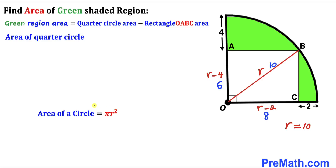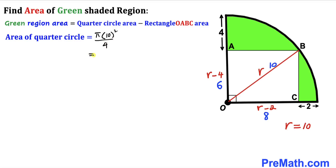Recalling the area of a circle formula: area equals pi R squared. The area of this quarter circle is pi times 10 squared divided by 4. Simplifying: 100 pi divided by 4 equals 25 pi.